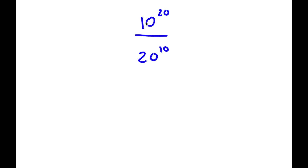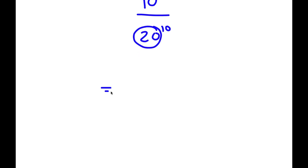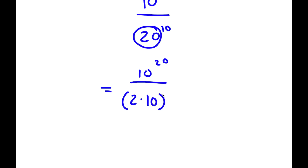So in this problem, I have 10 to the power of 20 over 20 to the power of 10. To solve this, I'm going to first rewrite 20 as 2 times 10. So now I have 10 to the power of 20 over 2 times 10 to the power of 10.